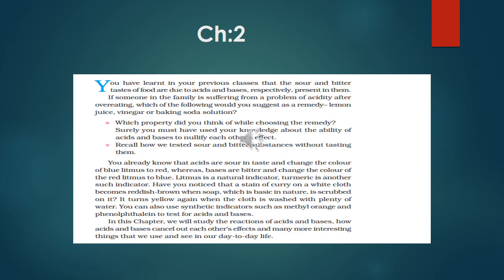Have you noticed that a stain of curry on a white cloth become reddish brown when soap, which is basic in nature, is scrubbed on it. It turns yellow again when the cloth is washed with bleach. You can also use synthetic indicators such as methyl orange and phenolphthalein to test for acid and bases. Remember phenolphthalein and methyl orange are two synthetic indicators means man-made indicator.